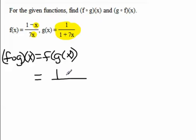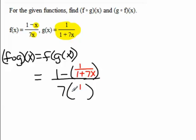In the numerator, I would have 1 minus the g function, which is 1/(1+7x). And in the denominator, I would have 7 times the g function, which is 1/(1+7x).